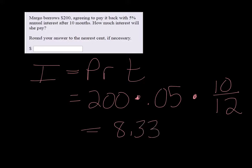We're talking about money here, so I round to two decimal places, to the nearest cent. So $8.33 is what Margo paid in interest.